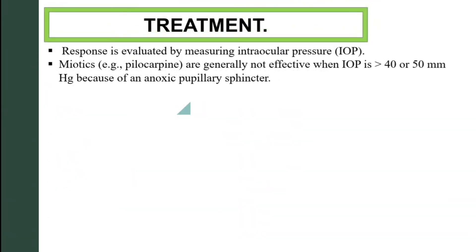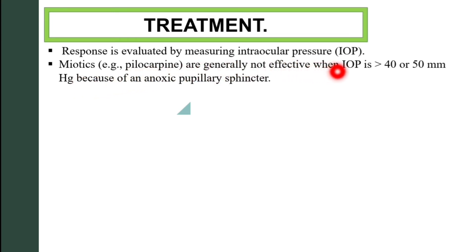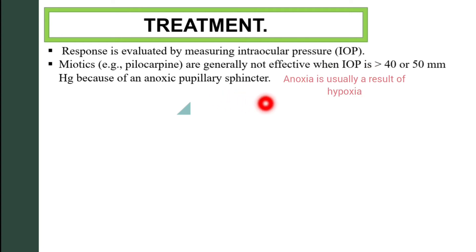The response to treatment is evaluated by measuring the intraocular pressure. Miotics like pilocarpine are generally not effective when the intraocular pressure is more than 40–50 mmHg because of an anoxic pupillary sphincter.